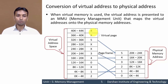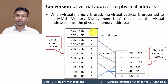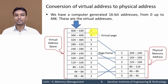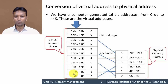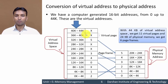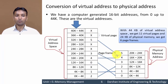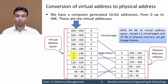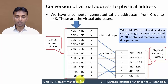When virtual memory is used, the virtual address is presented to the memory management unit (MMU), which maps the virtual address onto the physical memory address. Here we have a computer-generated 16-bit address space from 0 up to 44 KB. With 44 KB of virtual address space we get 11 virtual pages. With 24 KB of physical memory we get 6 page frames, each of 4 KB size — since page size and frame size are always equal.